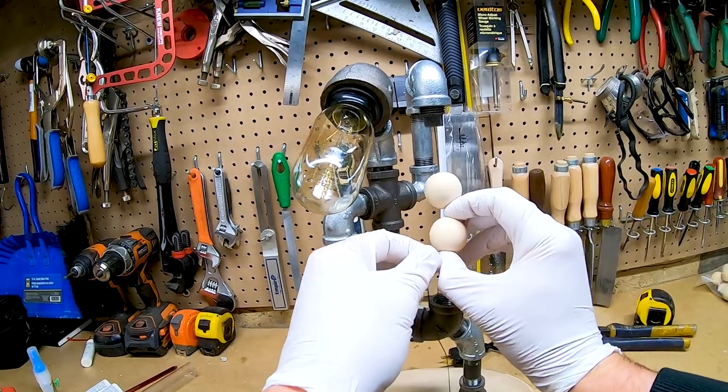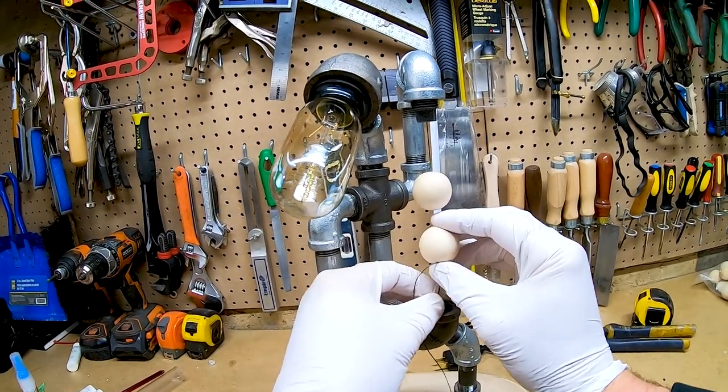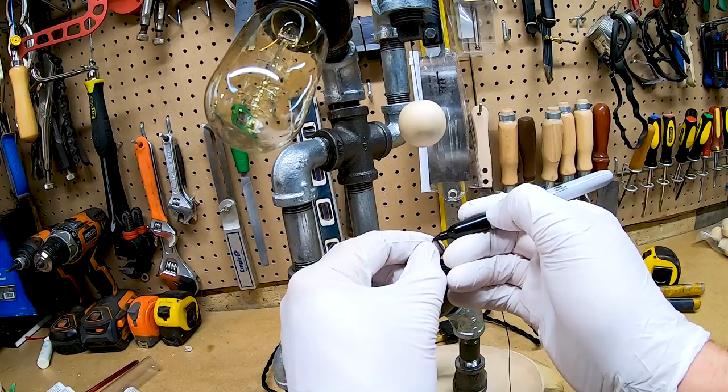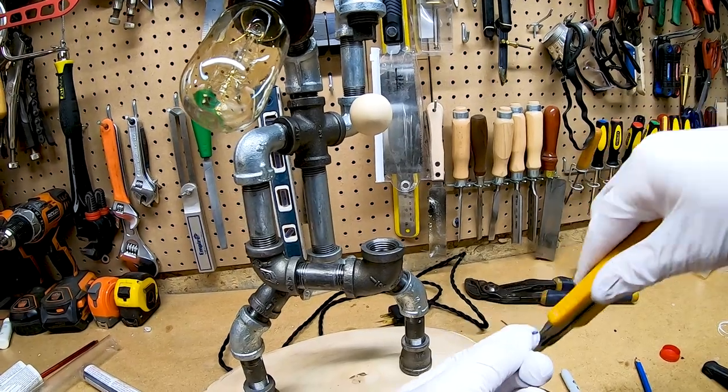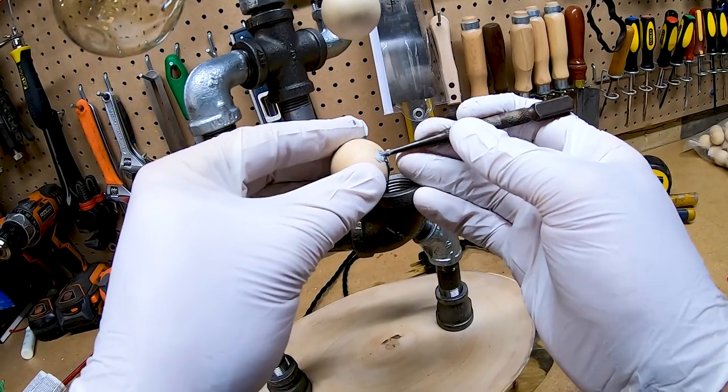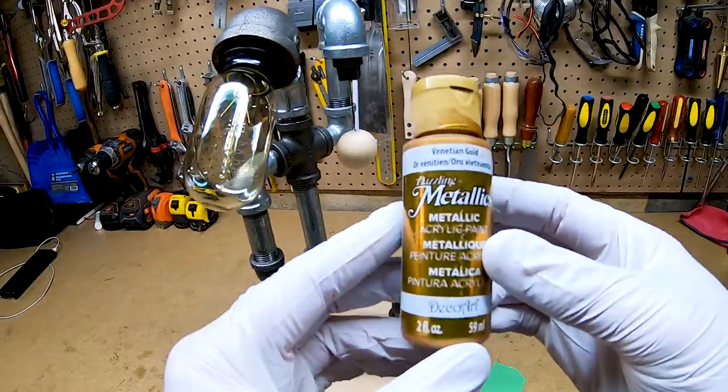I raised the ball to my desired height and marked the string where it meets the ball. I cut about two inches above my mark and attached the string to the ball using the same method as before. After the bonding putty hardened, I decided to paint the balls gold for a nicer look.